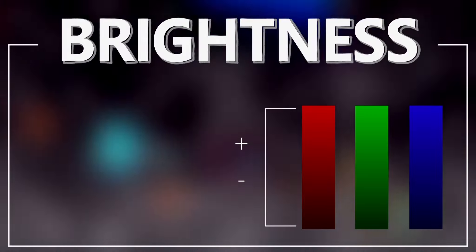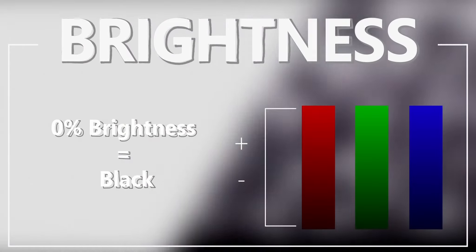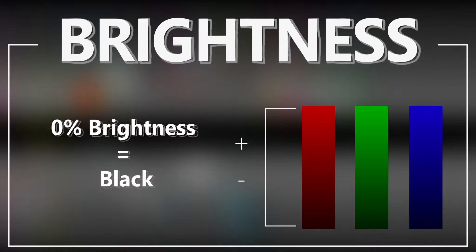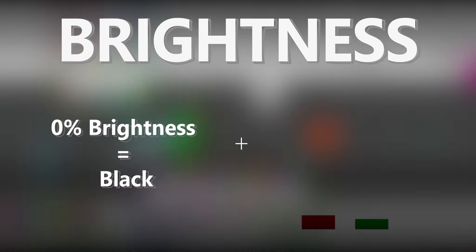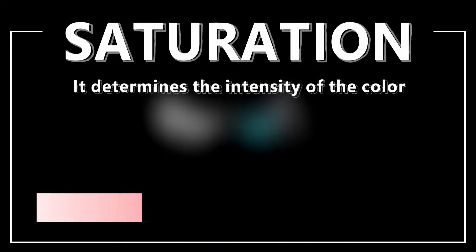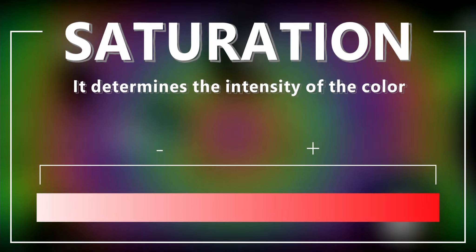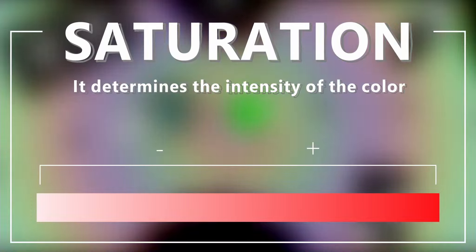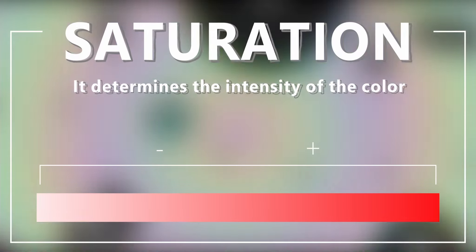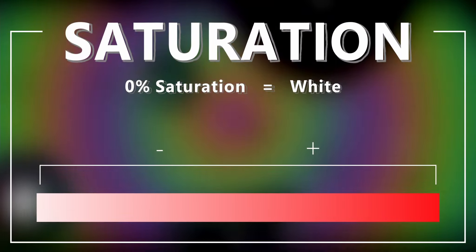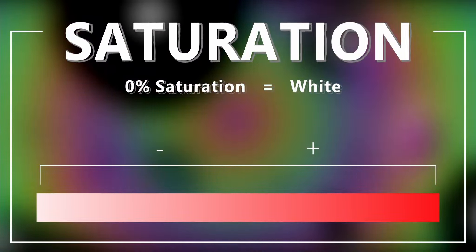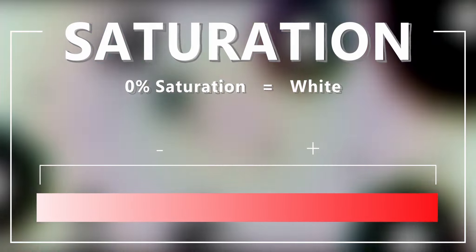Setting the brightness of a color to zero will get the color black. However, to get a white color, 100% brightness won't do it — for that, we need to look at saturation. Saturation determines the intensity of the color. For example, low saturation will give us a very faint tone, while setting it at a higher value will give us a stronger, more vibrant color.